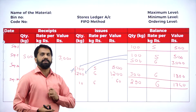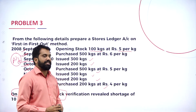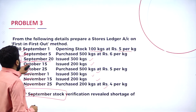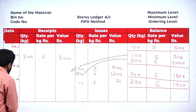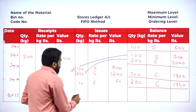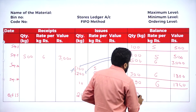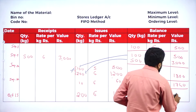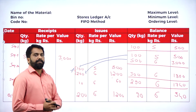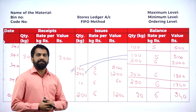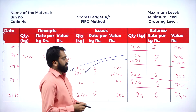September is now over. Moving to October 15th: issue of 200 kgs. Out of the 290 kg balance, issue 200 at rupees 6, value 1200. Balance remaining: 90 kgs at rupees 6, value 540. We now have only one box with 90 kgs at 6 rupees.